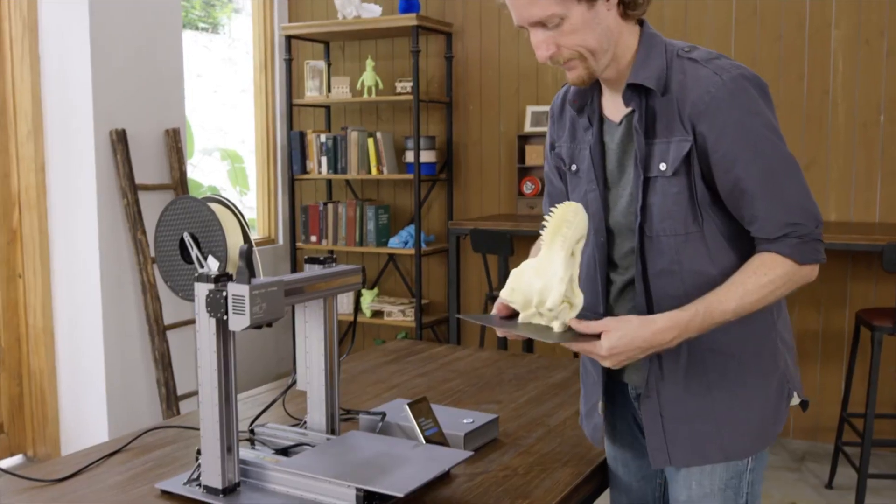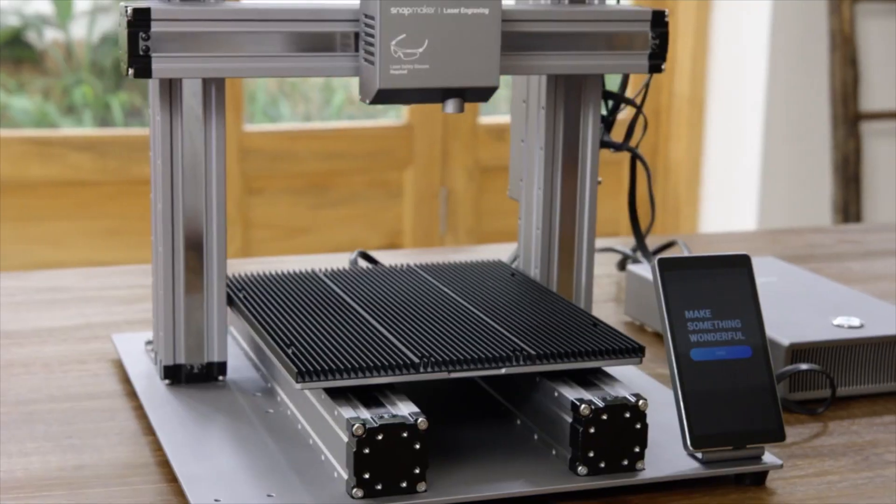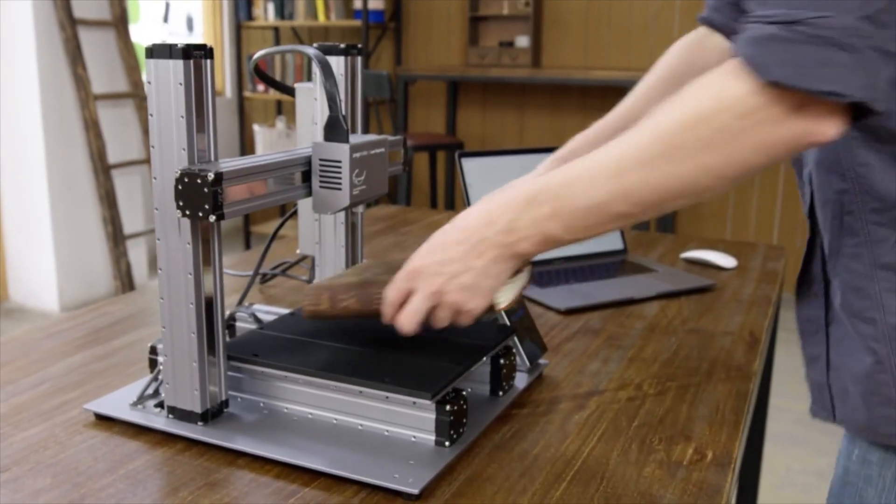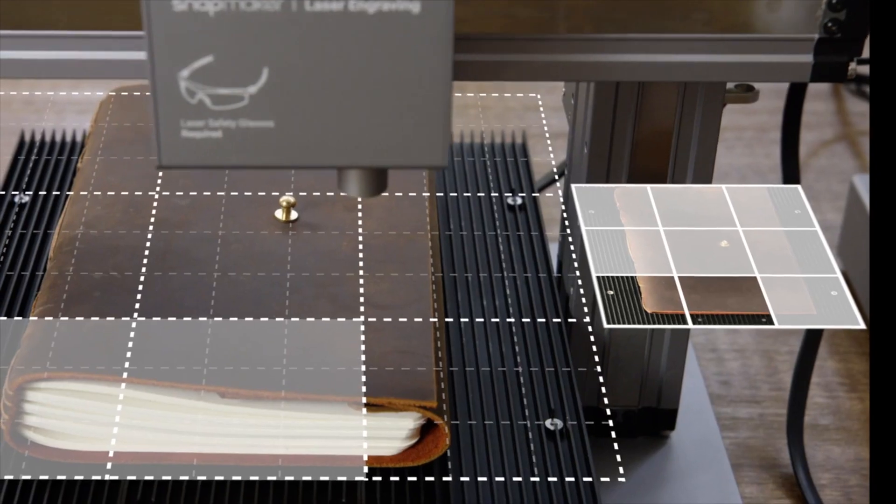To remove a print, simply lift the build plate and flex it. For laser cutting it uses a specially designed aluminum grid table. Its built-in camera allows you to preview a design on any material or surface.